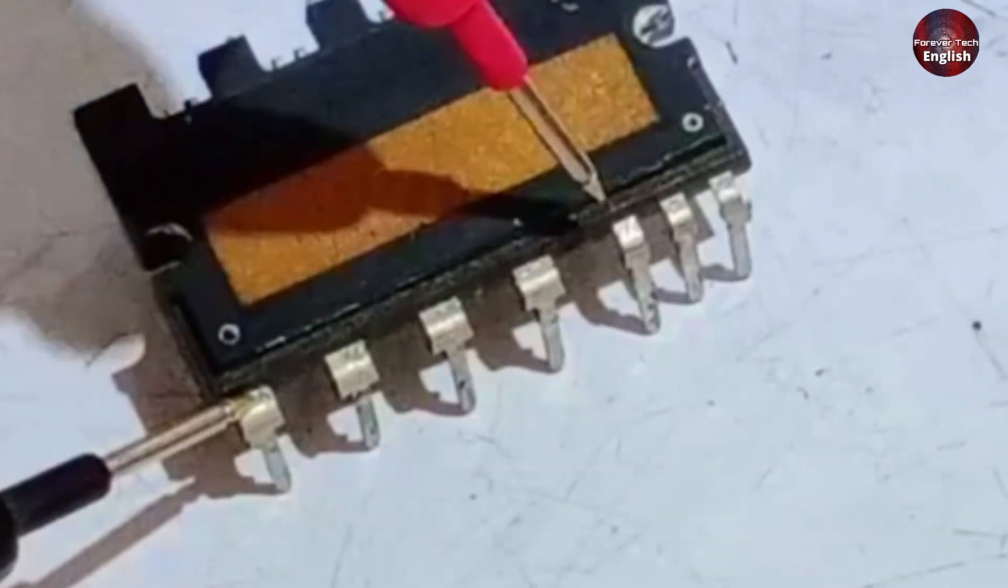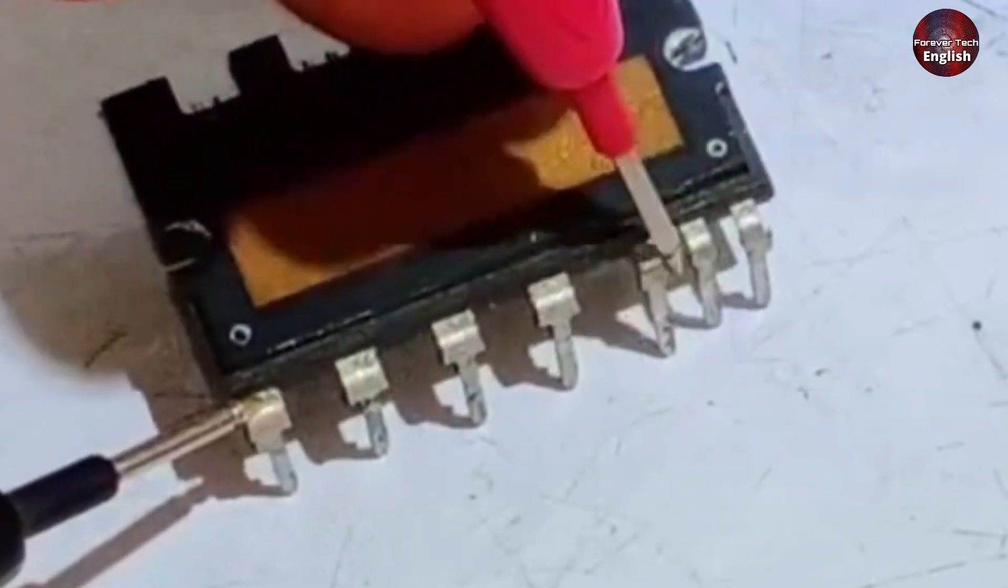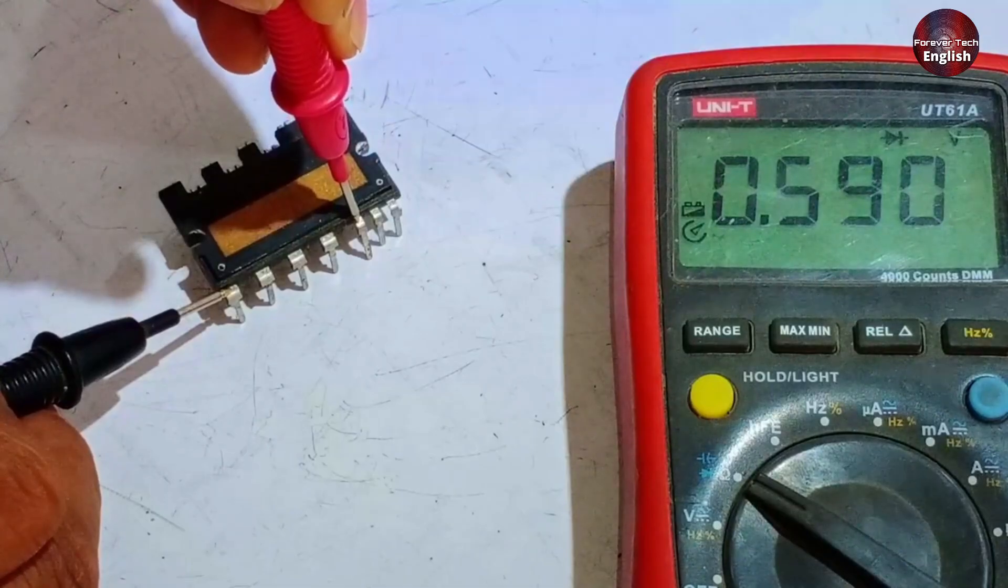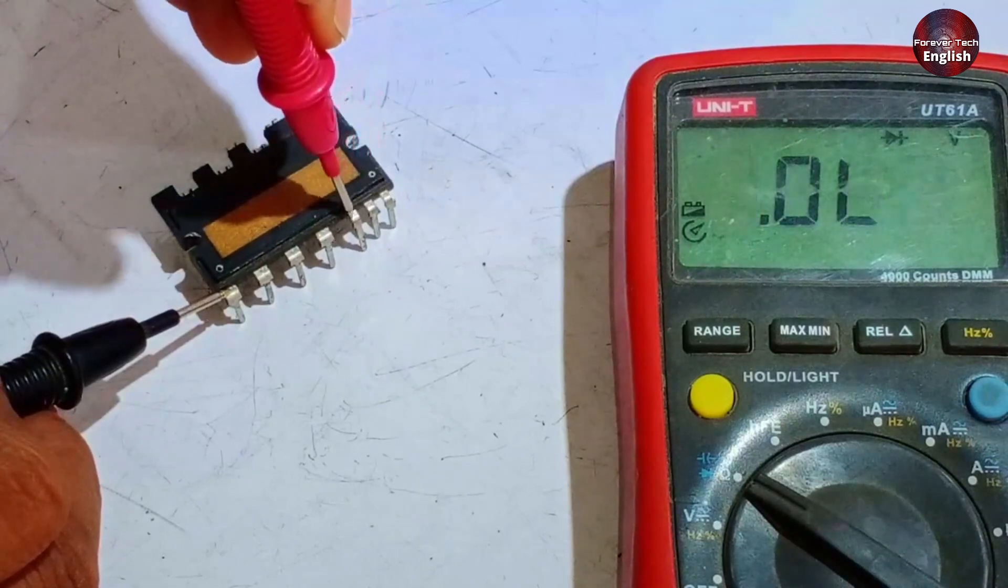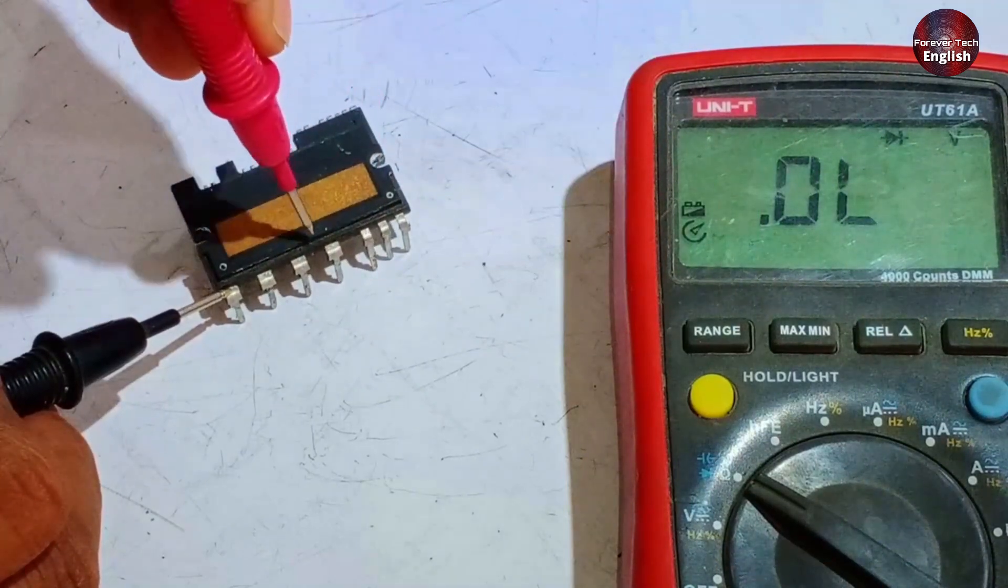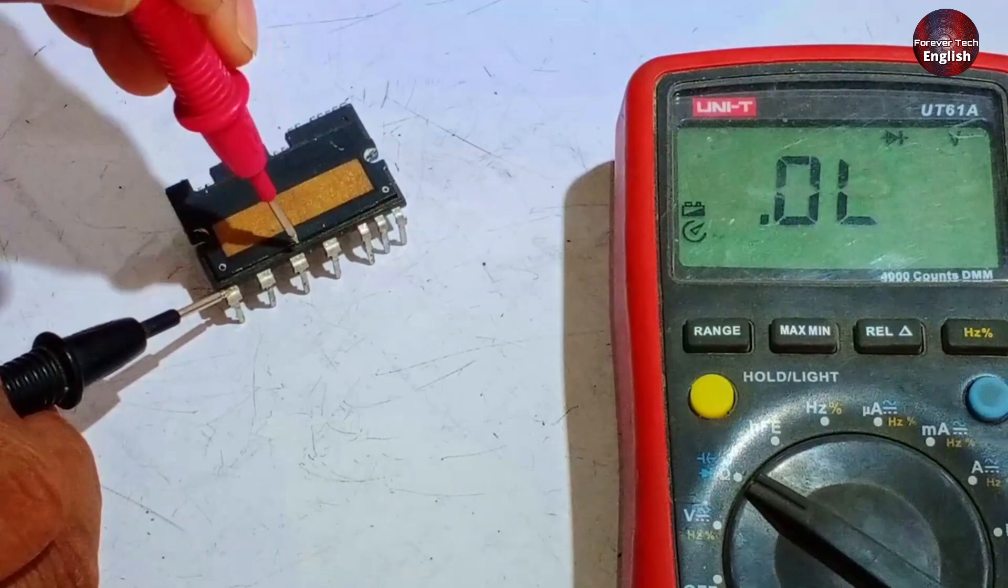Next, we'll test pin 23. There also shouldn't be any value displayed here because the second IGBT is shorted as well, which is why a value is showing up. Only pin 21 should display a value. No other pins should. Pin 24 is not connected.